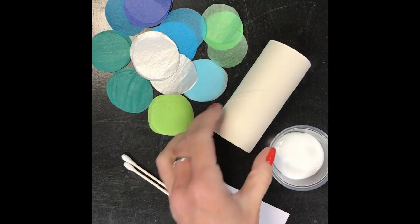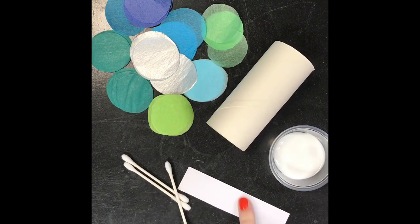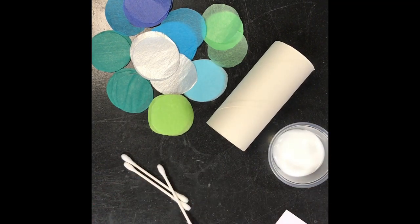What do we need to make a flying carp? We have a cardboard tube, some glue, Q-tips, paper for eyes, and all of this beautiful tissue paper.